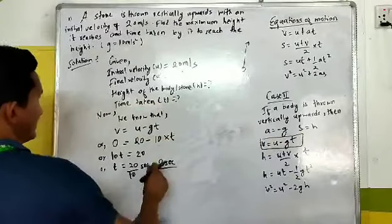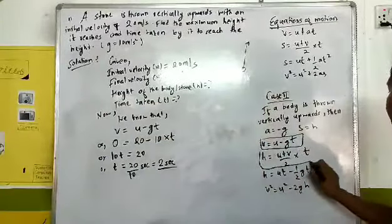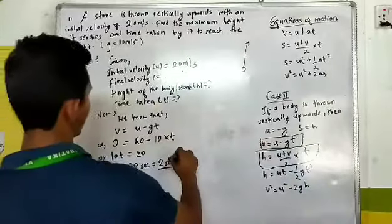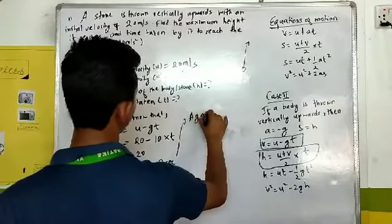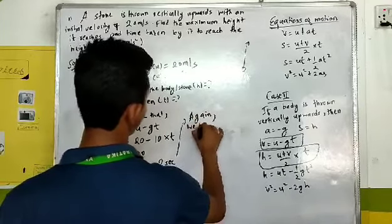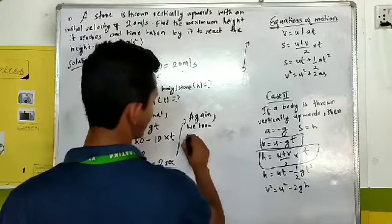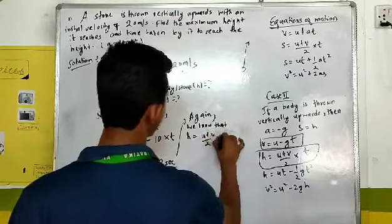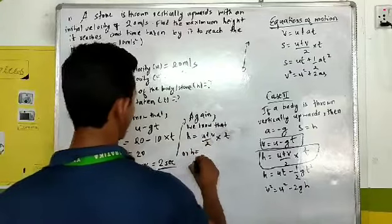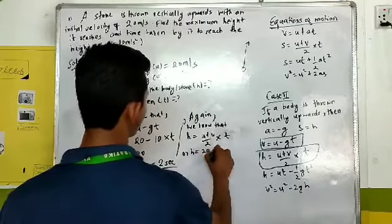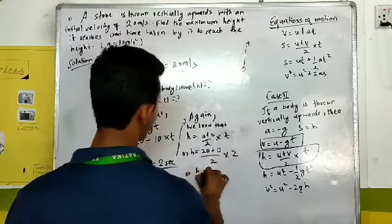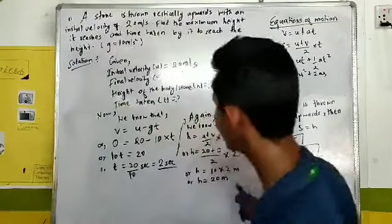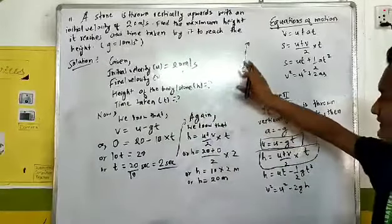Now we have already got the time taken. Now you can use this formula to find out the maximum height it reaches. You know that h is equal to (U plus V) by 2 into T. So h is equal to (20 plus 0) by 2 into 2 second. h is equal to 10 into 2. h is equal to 20 meter. These are the values that we have taken out from this problem.